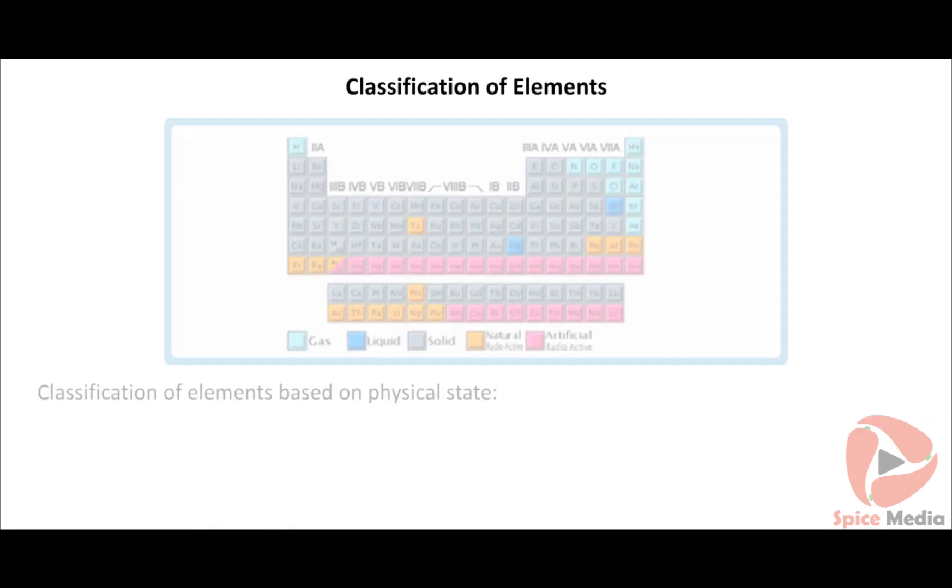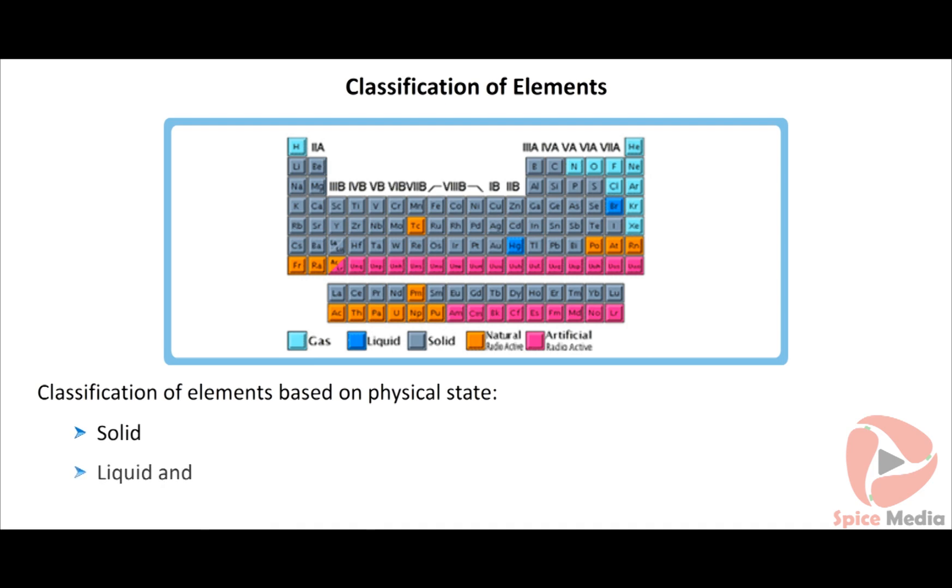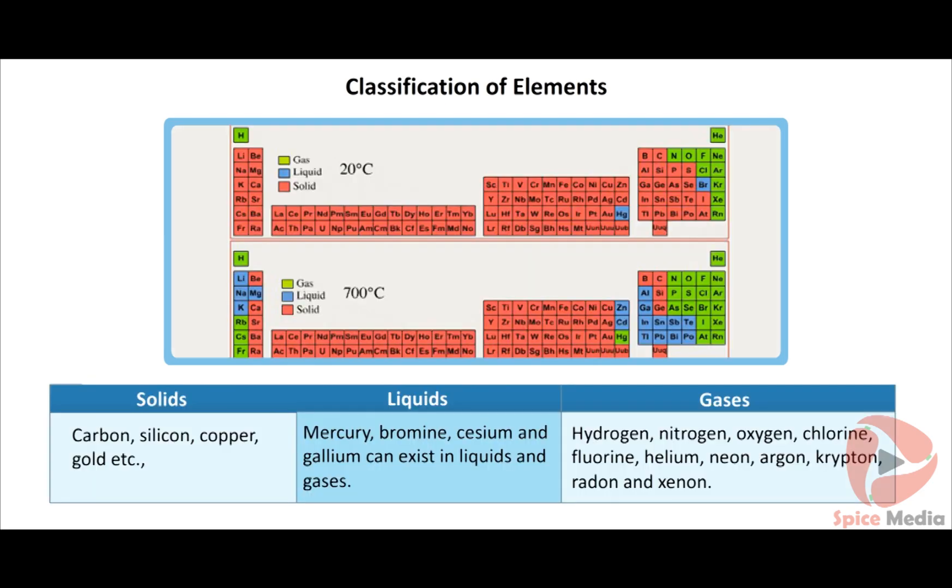It is classified into solid, liquids and gases. Solids: carbon, silicon, copper, gold, etc. Liquids: mercury, bromine, cesium and gallium. Gases: hydrogen, nitrogen, oxygen, chlorine, fluorine, helium, neon, argon, krypton, radon and xenon.